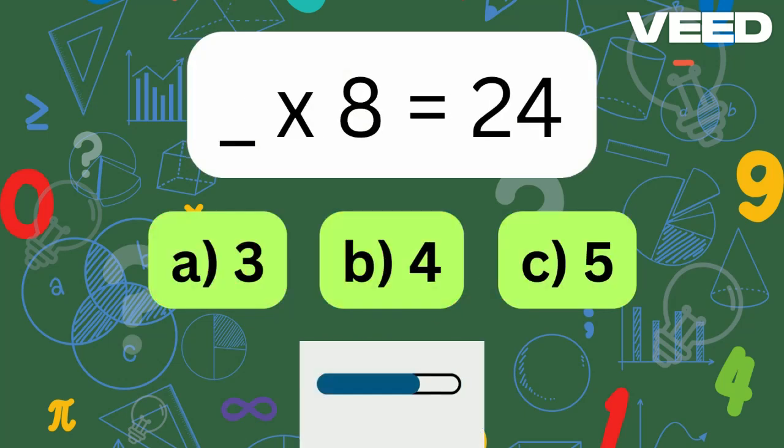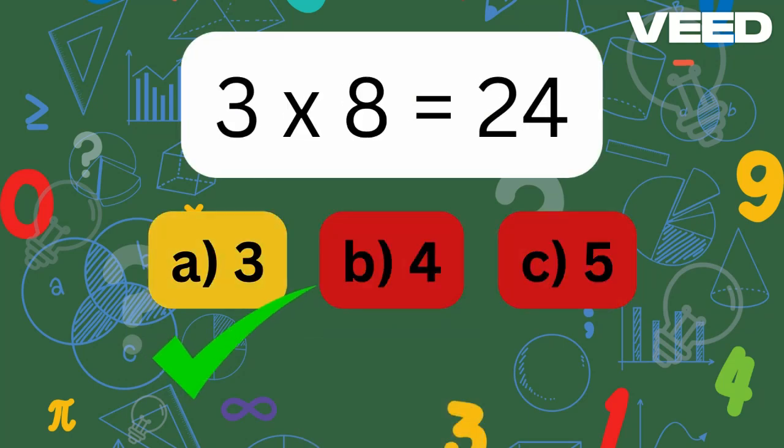What times 8 is 24? 3 times 8 is equal to 24.